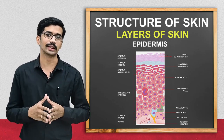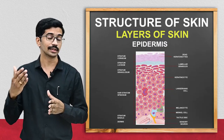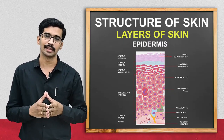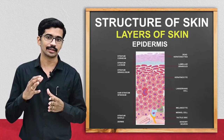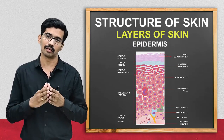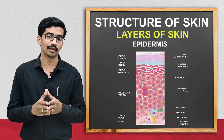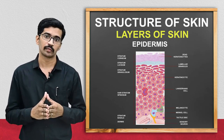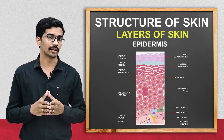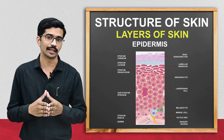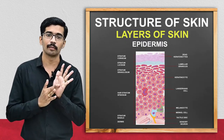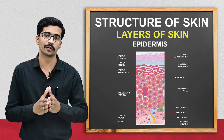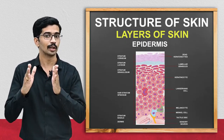Just below the stratum corneum is another layer, the stratum lucidum. This is the thickest layer of the skin and can only be seen in our palms and soles. You can observe that compared to other areas, our palms and soles are very much thicker because of the presence of the stratum lucidum.